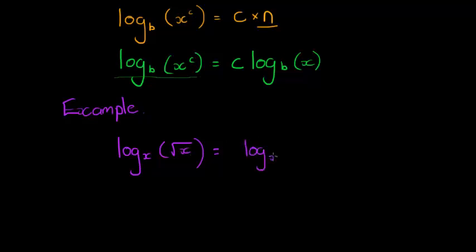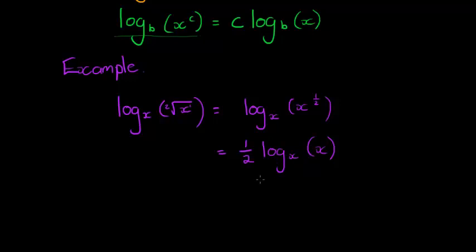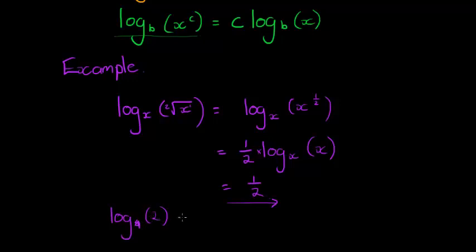I can write this as log base x of x to the power of one-half, since the square root means dividing the exponent by two. According to the law, I bring the one-half to the front: one-half times log base x of x. Since the base and the interior are the same, that log equals one — so the answer is just one-half. If log base 4 of 4 equals 1, then log base 4 of the square root of 4 equals one-half.